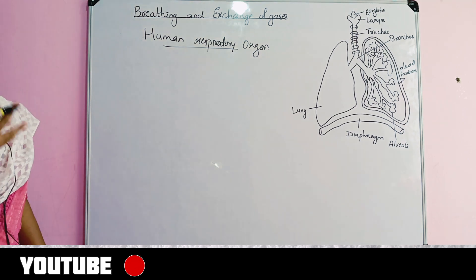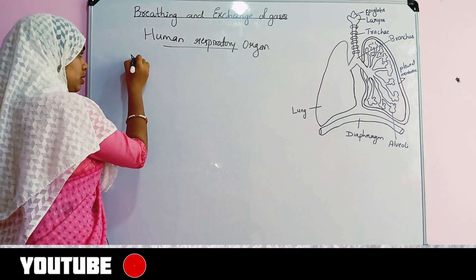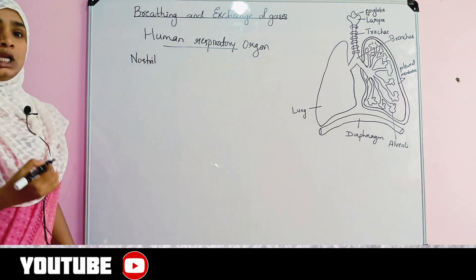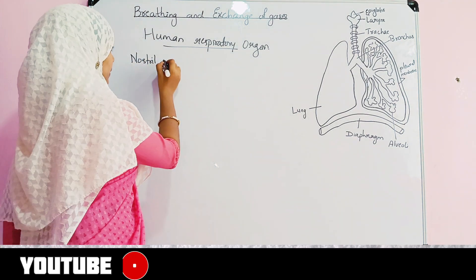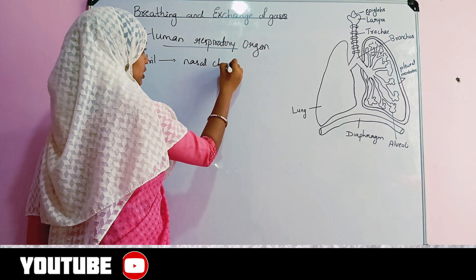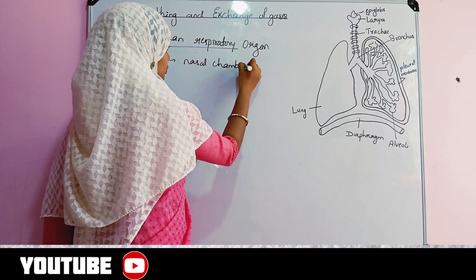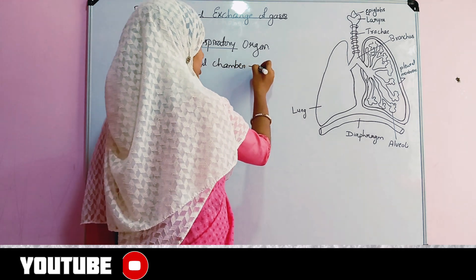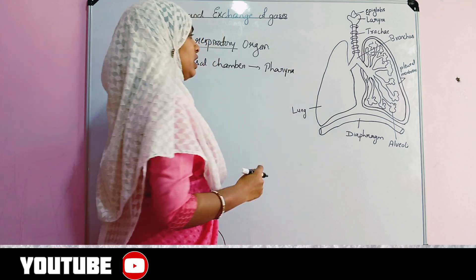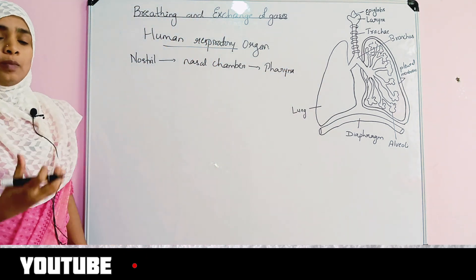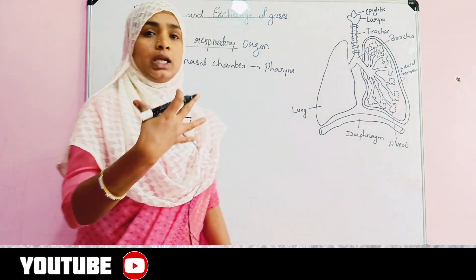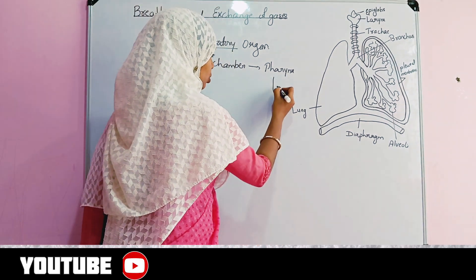The first respiratory organ in humans starts from the nostrils. Through the nasal passage, this leads into the nasal chamber. In the nasal chamber, the pharynx opens. The pharynx is common for both food and air.